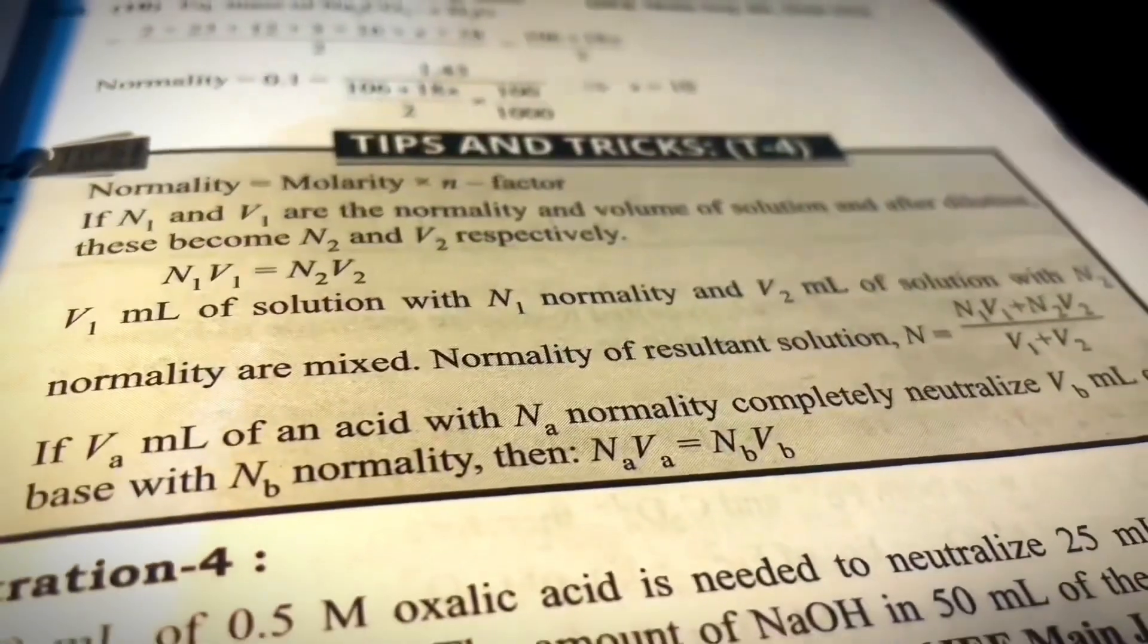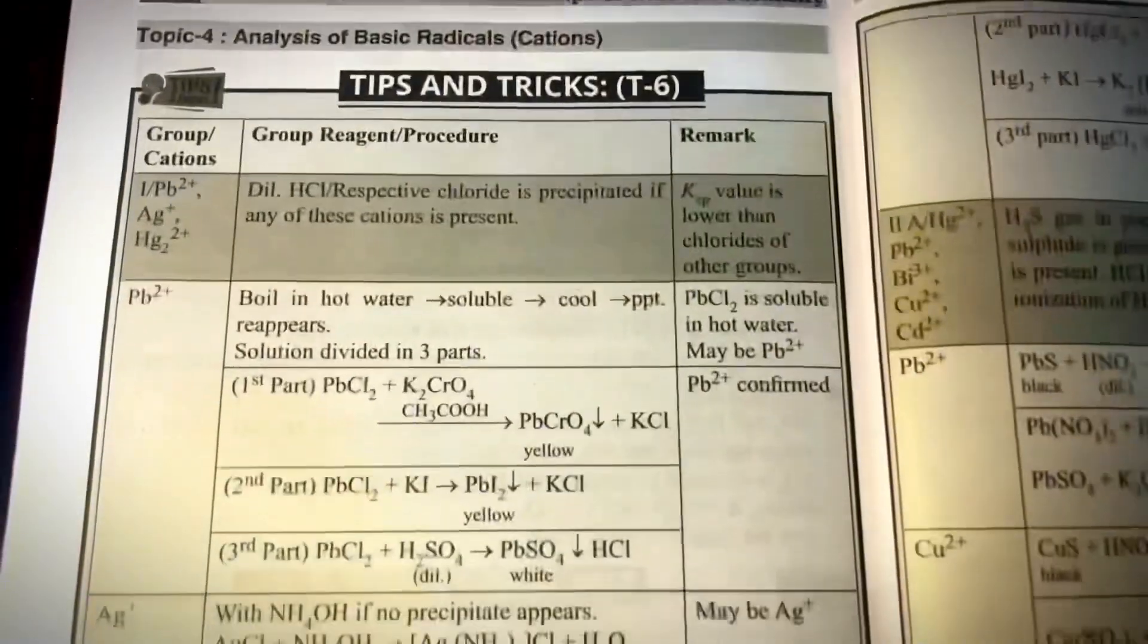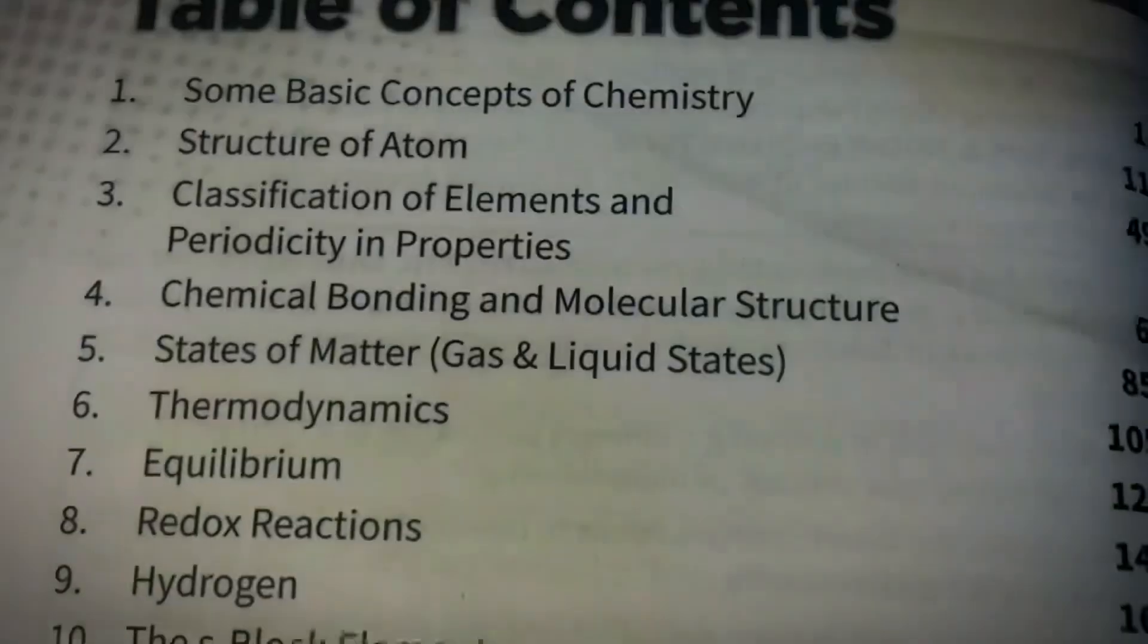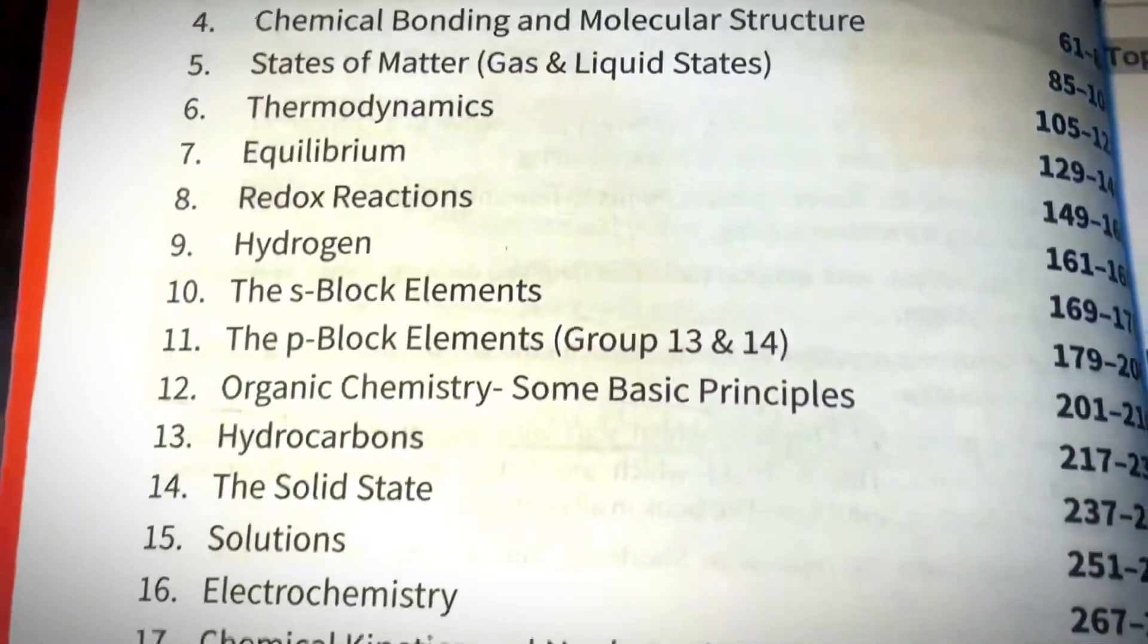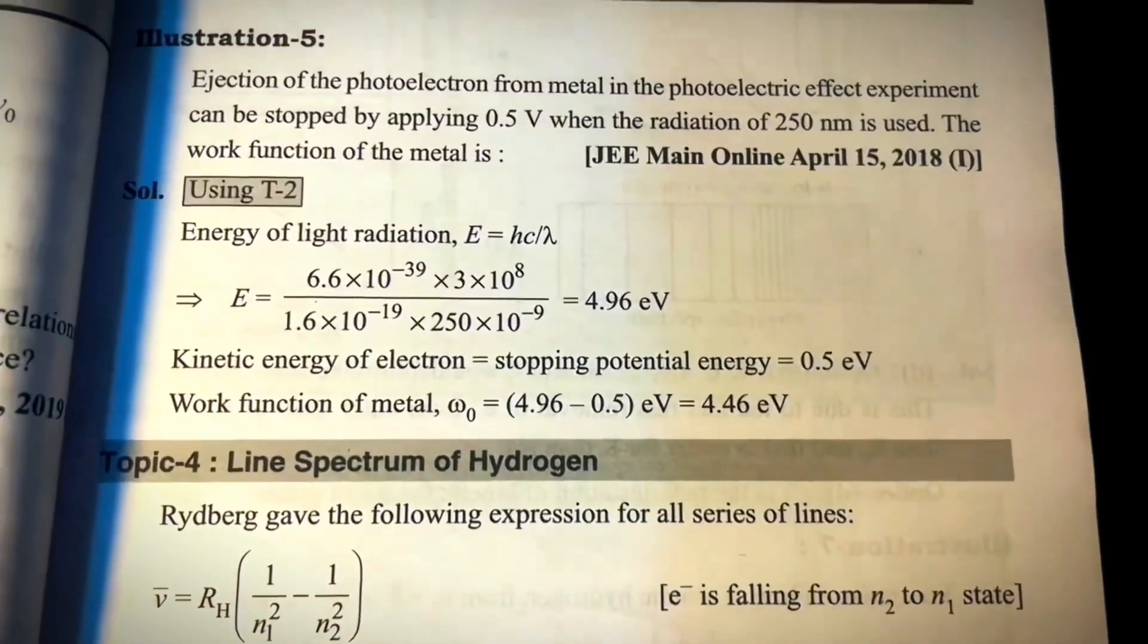It has 325+ JEE level questions with shortcut possible solutions, and chapter-wise and topic-wise important formula sheets. It also contains chapter-wise most important points for problem solving and contains magical tools for faster methods to solve problems. This book will definitely increase your speed and improve your score by 15 to 20 percent.